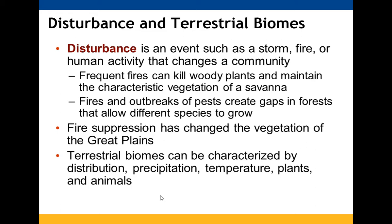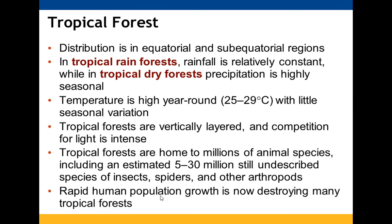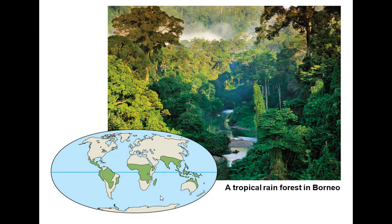Tropical forests are found in equatorial and sub-equatorial regions. In rainforests, rainfall is fairly constant; in dry tropical forests, precipitation is more seasonal. Temperatures are pretty constant, around 25 to 29 degrees Celsius (low-to-mid 80s Fahrenheit), with little seasonal variation. These forests are vertically layered, with intense competition for light. They are home to millions of animal species, many not yet identified, and human population growth is destroying large portions of these forests.